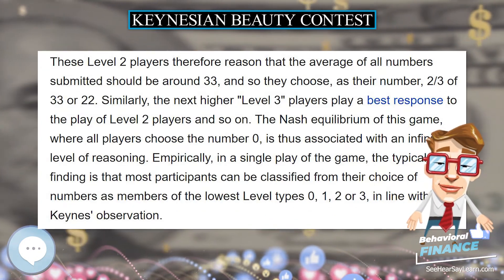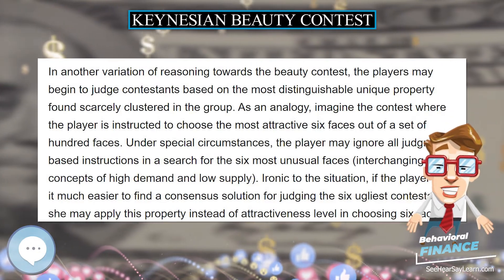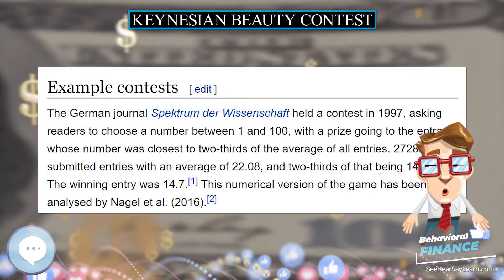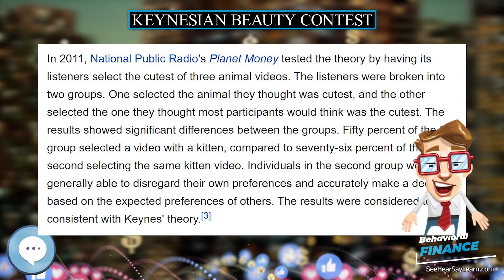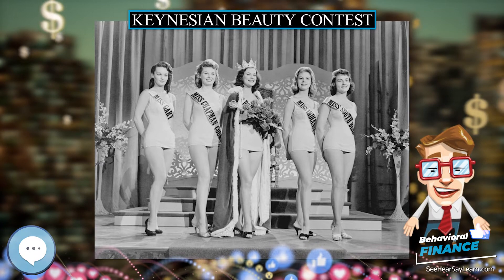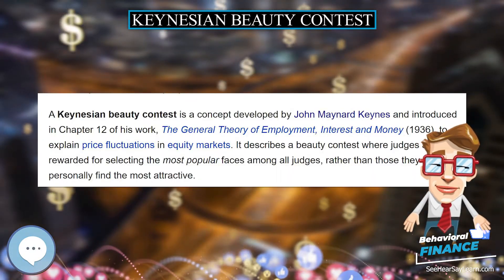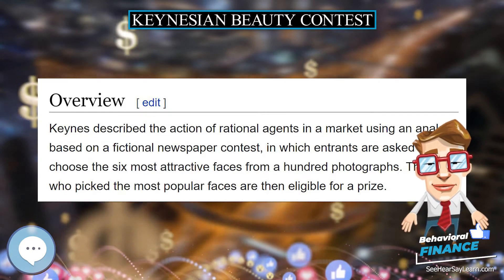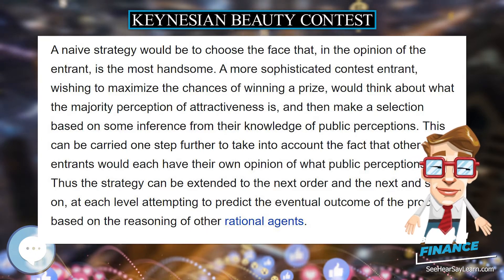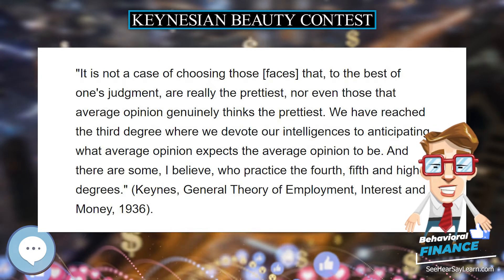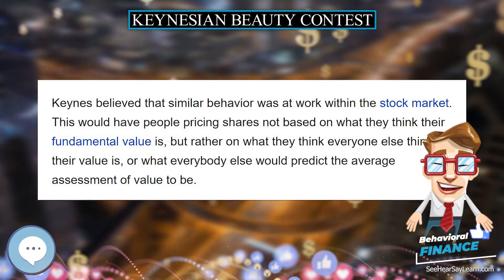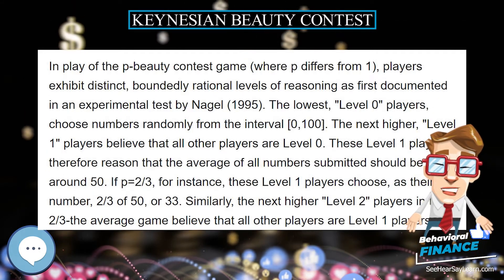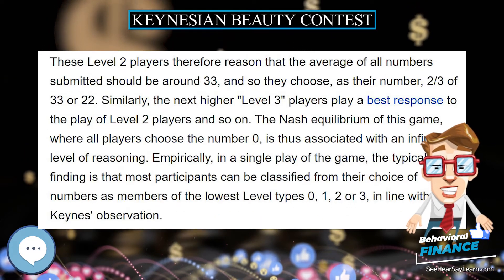In the P-Beauty contest game, where P differs from 1, players exhibit distinct, boundedly rational levels of reasoning as first documented in an experimental test by Nagel. The lowest, level 0 players, choose numbers randomly from the interval. The next higher, level 1 players believe that all other players are level 0. These level 1 players therefore reason that the average of all numbers submitted should be around 50. If P equals two thirds, for instance, these level 1 players choose two thirds of 50, or 33. Similarly, level 2 players in the two thirds game believe all other players are level 1, reason that the average should be around 33, and so choose two thirds of 33, or 22. Level 3 players play a best response to level 2 players, and so on. The Nash equilibrium of this game, where all players choose the number 0, is thus associated with an infinite level of reasoning.